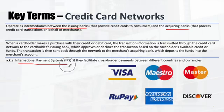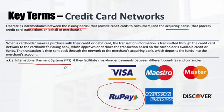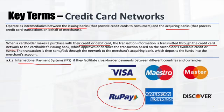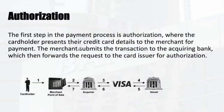Credit card networks are also called international payment systems. RuPay is a domestic one from India, but Visa, Mastercard, and American Express are international. When a cardholder makes a purchase, the transaction information is transmitted using the credit card network from the acquirer to the issuer bank, which will then approve or decline the transaction based on multiple parameters.